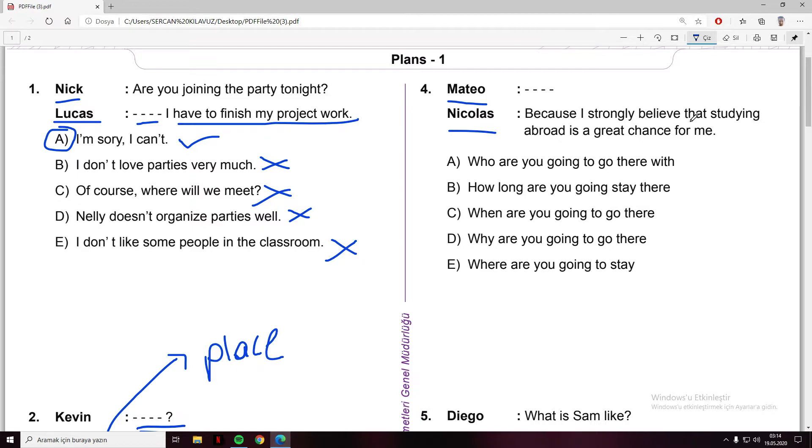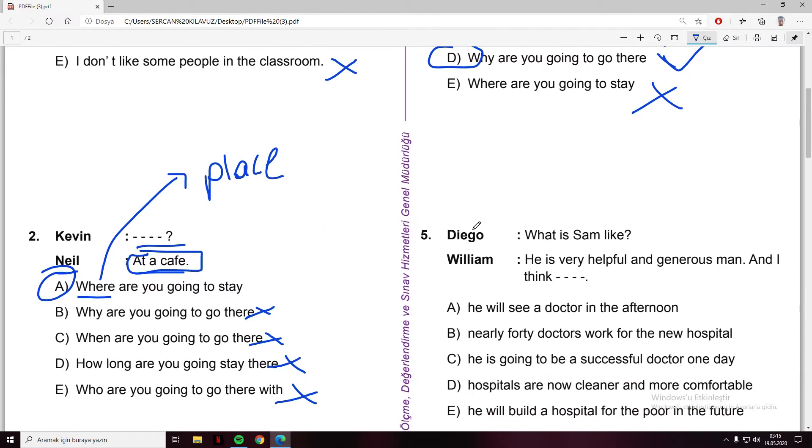Matteo and Nicolas: because I strongly believe that studying abroad is a great chance for me, and we have a blank. What about our question? Let's find out. Who are you going to go there with - no. How long are you going to stay there - no. When are you going to go there - no. Why are you going to go there - because, question and reason. This is because I strongly believe that studying abroad is a great chance for me.